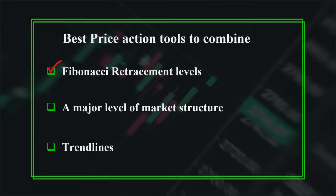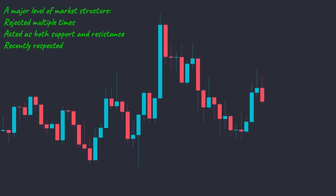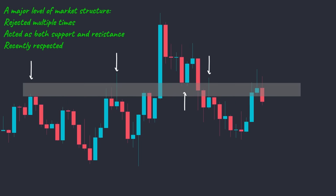Let's continue with the second price action tool: a major level of market structure. A major level of market structure refers to a level that has been rejected multiple times, acted as both support and resistance, and has recently been respected. Here, this area has been rejected multiple times recently and has acted as both support and resistance. When the price returns to this zone, it is an excellent opportunity to look for short entries — we closely monitor price action signals and candlestick patterns for our entry reason. For instance, forming a bearish engulfing candlestick pattern in this zone can be our entry reason to go short.